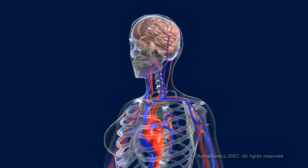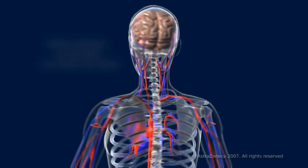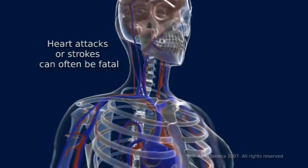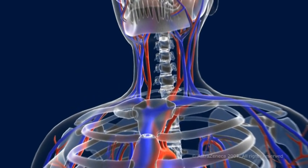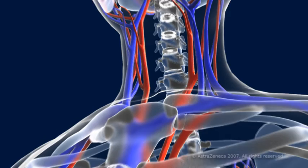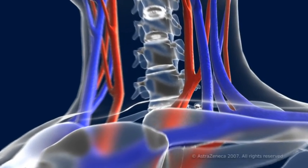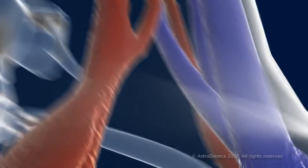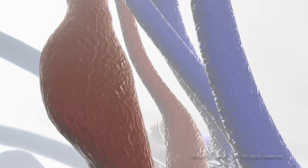If a plaque ruptures, the resulting blood clot may block the artery and cause a heart attack or a stroke, which can often be fatal. Atherosclerosis may also cause the artery wall to weaken, causing it to bulge under the pressure from the blood. This bulge, called an aneurysm, can rupture, and the resulting bleed, called a haemorrhage, can be fatal.